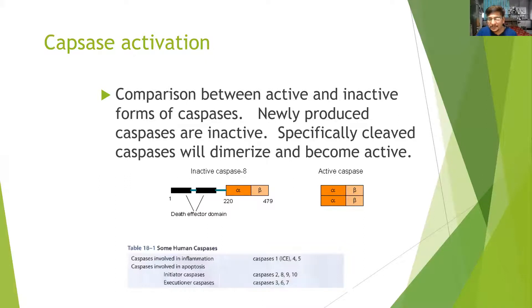Regarding caspase activation: in the beginning, any caspase is going to be inactive and requires certain regions to be removed. For example, the inactive caspase-8 has an alpha and beta domain with a death domain that needs to undergo proteolytic cleavage. Once it is removed, the alpha and beta domains get dimerized and the caspase is activated.